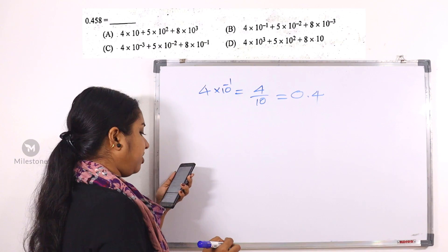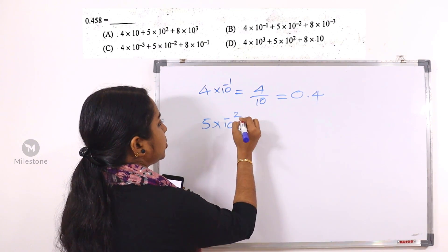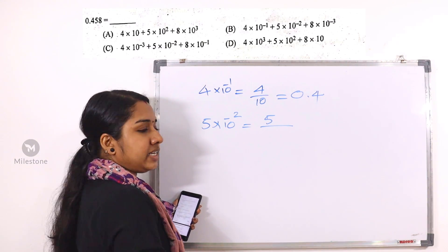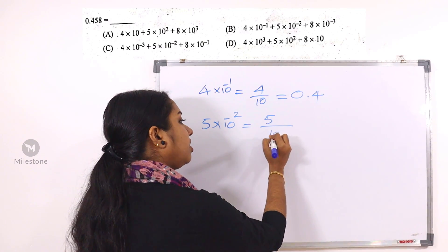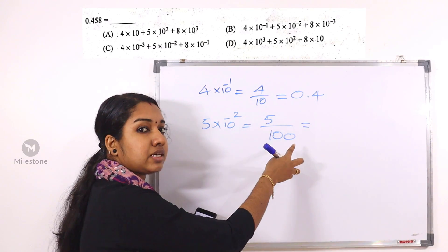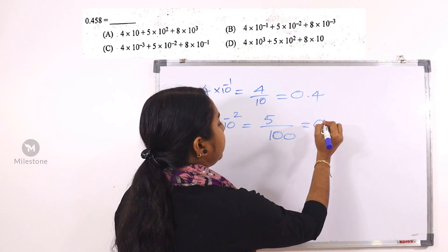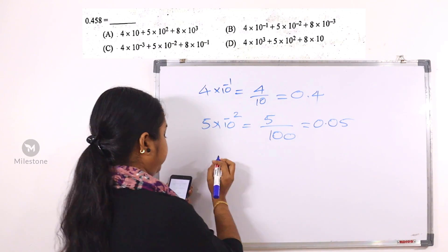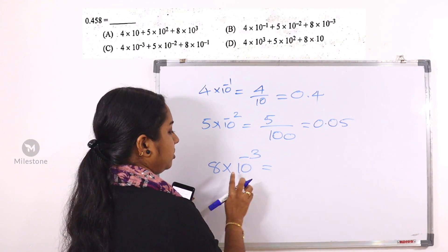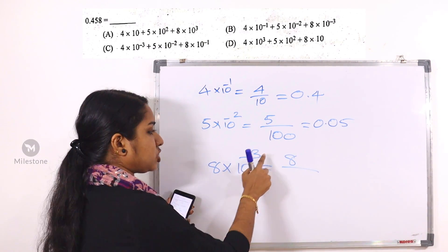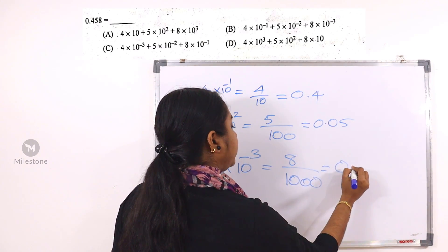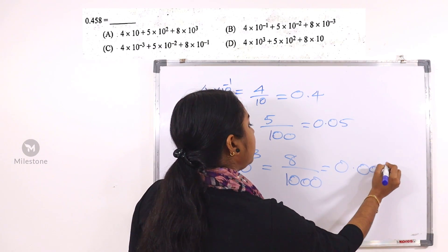The second part is 5 by 10 raised to minus 2. We write 10 raised to minus 2 as 1 by 10 squared, which is 1 by 100. So 5 by 10 raised to minus 2 equals 5 by 100. Then 8 by 10 raised to minus 3 equals 8 by 1000, which is 0.008.